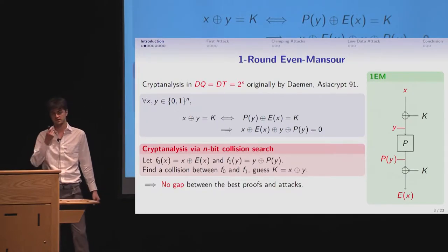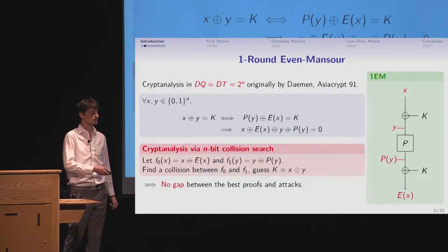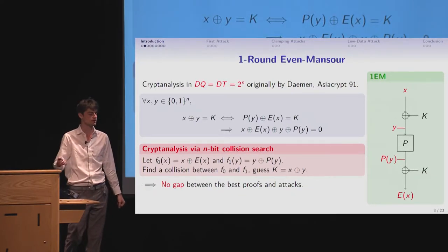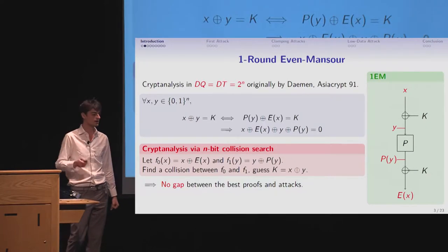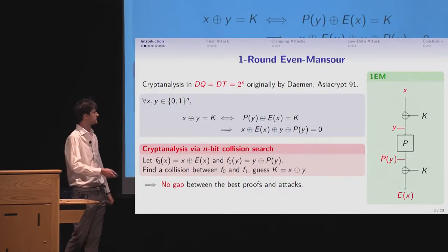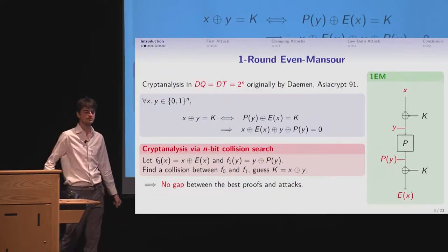And if you sum those two equations together, you get that the sum of every variable, x plus E of x plus y plus P of y, must have to be 0. Then the attack is just a collision search, right? You can define two functions, x plus E of x, and the other one, y plus P of y. And if you find a collision between those two functions, you get a good guess for the key, because you found a pair that satisfies the equation above.